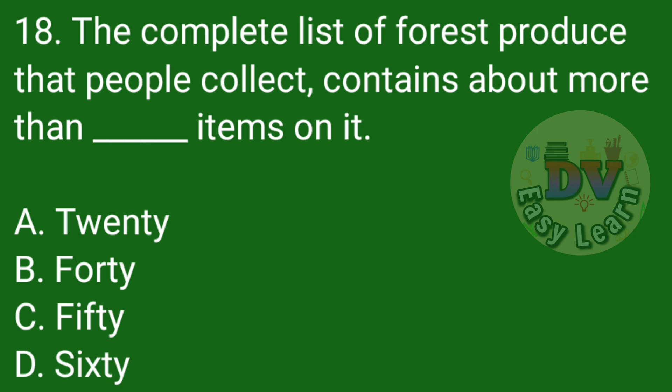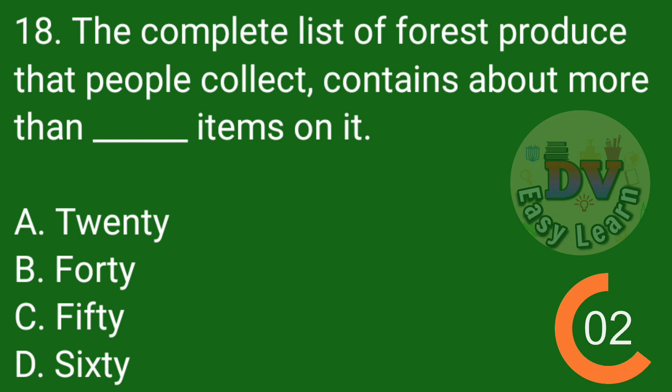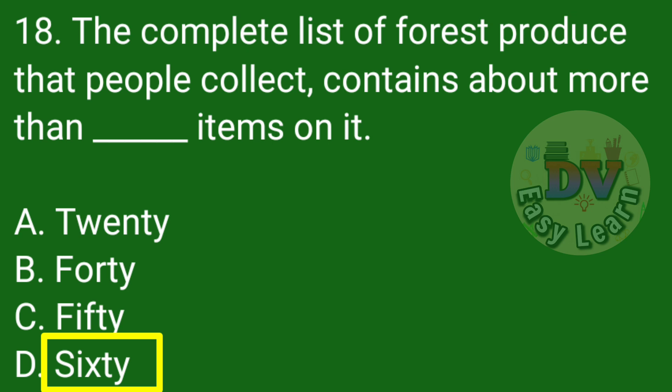Question number 18: The complete list of forest produce that people collect contains about more than dash items on it. Correct answer: 60.